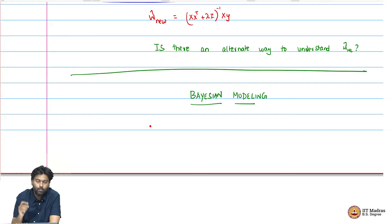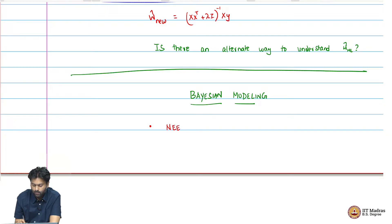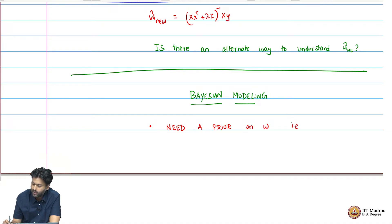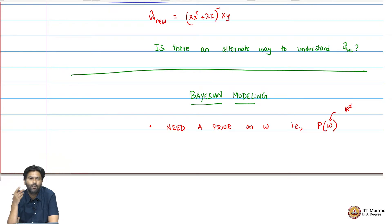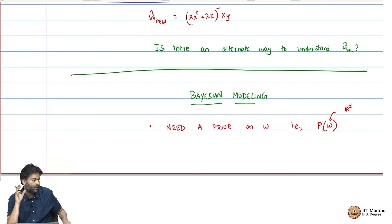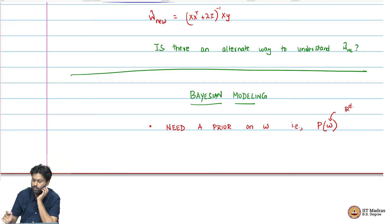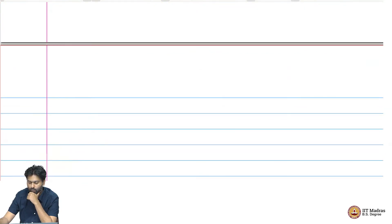In our case, the parameter we are trying to estimate is w, which means we need a prior on w — that is, we need some p of w, where w is a d-dimensional vector. So over all possible d-dimensional vectors we need some probability distribution, some density function, because it is a continuous space. We will talk about what density function might be suitable here in a minute, but we need a prior.